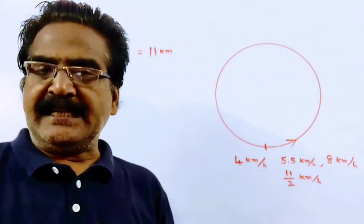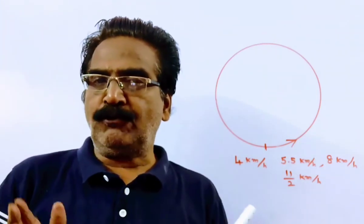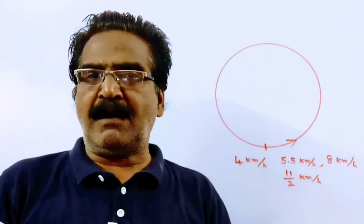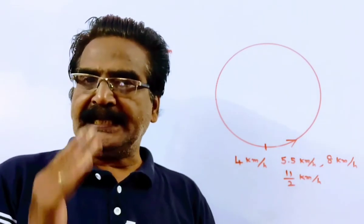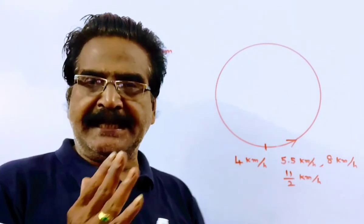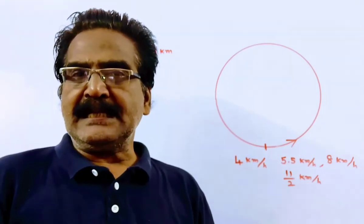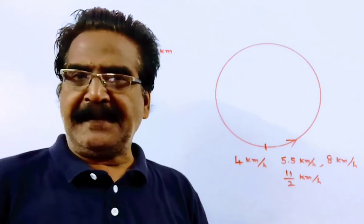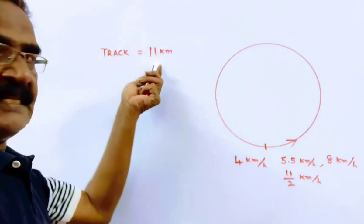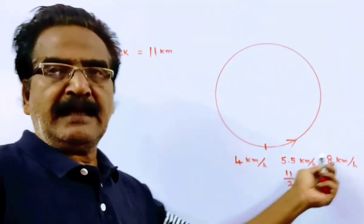Friends, to find this, we have to find the LCM of times they take to run around the field. Time means distance by speed. Here distance is given, speeds are given.